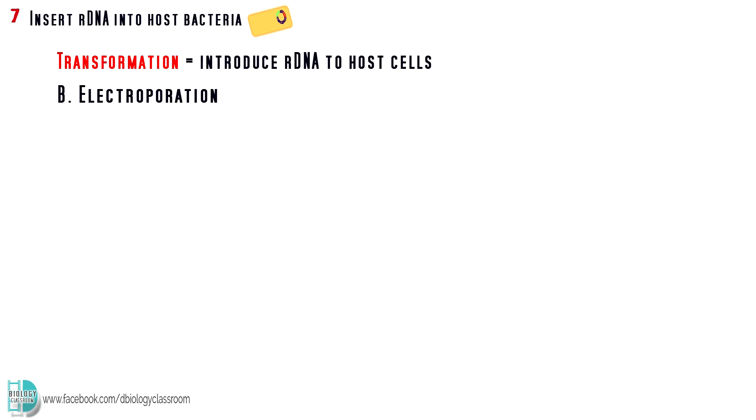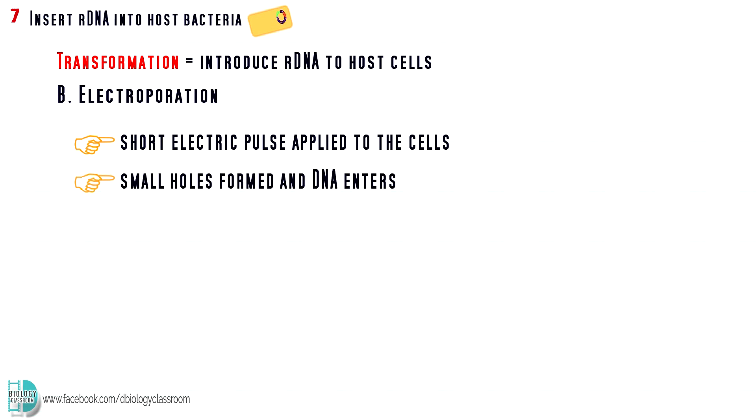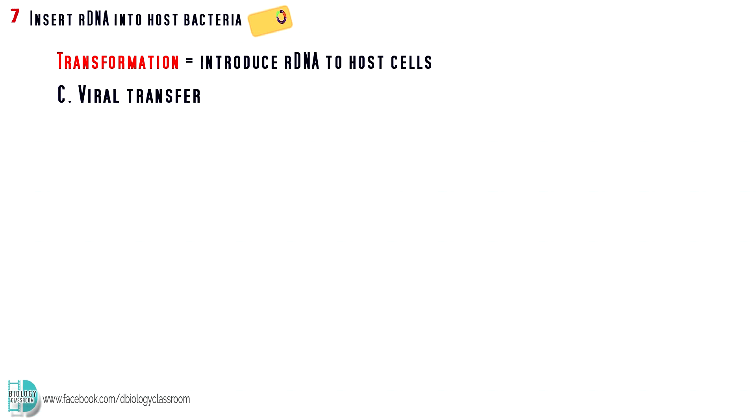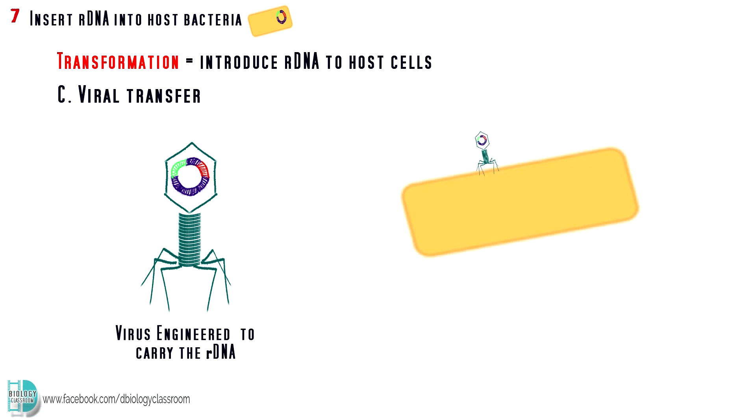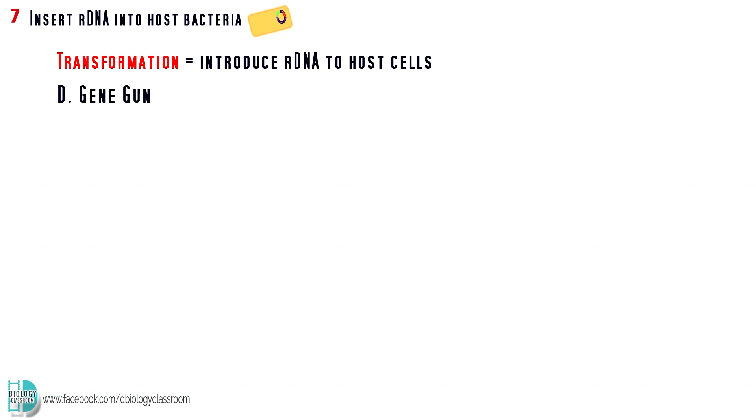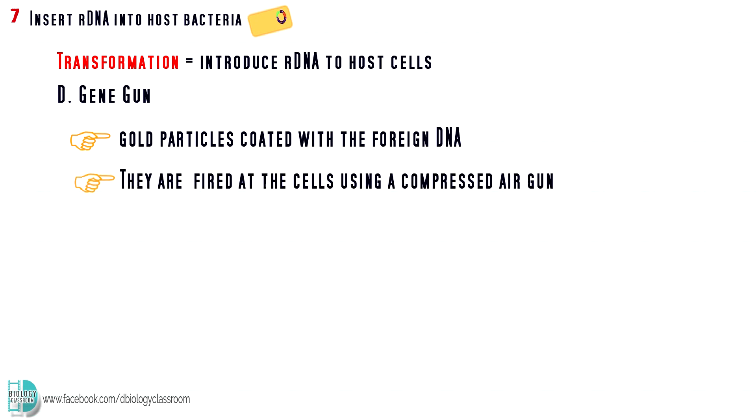The second way is electroporation. A short electric pulse is applied to the cells, causing small holes in the membrane through which the DNA enters. The third way is viral transfer. The plasmid is first incorporated into a virus, which is then used to infect host cells. The virus will insert the foreign gene along with its own genetic material into the host cell. Another way to transform a cell is by using a gene gun. In this technique, microscopic gold particles coated with foreign DNA are fired at the cells using a compressed air gun. It is designed to overcome the problem of the strong cell wall in some cells.